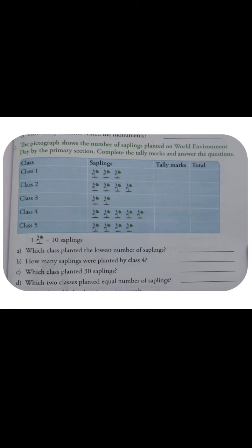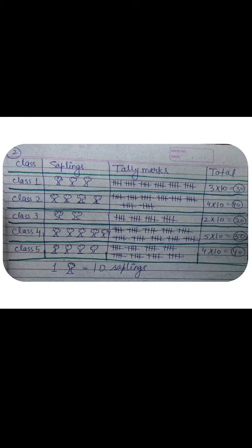Coming to the second question. We had already completed the table and drawn the tally marks, and written the total counting. So today in class we will again read that table and solve the remaining questions. The first question is: which class planted the lowest number of saplings? Lowest means which class planted the fewest saplings. We have Class 1, Class 2, Class 3, Class 4, Class 5 — all their data is here in pictograph form. We already converted it to tally marks to find the totals.